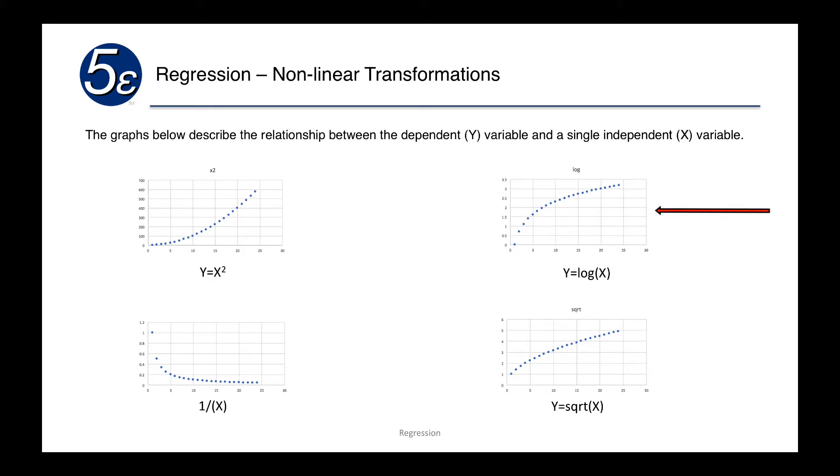The second one we have y equals log of x and the curve looks like it goes up and then begins to somewhat level off, but it will never level off completely. The bottom one shows 1 over x, a different type of relationship as it curves downward. And the next one shows a similar one to the log, but it's a little bit different and this is the square root of x.